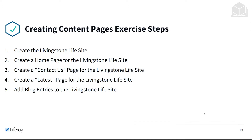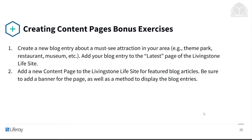And then we'll add blog entries to the Livingston Life site. After this exercise, there will be some bonus exercises that I won't be going through, but that you can try for yourself. This includes creating a new blog entry about a must-see attraction in your area, for example, a theme park, a restaurant, a museum, and so on. You can add your blog entry to the latest page of the Livingston Life site.